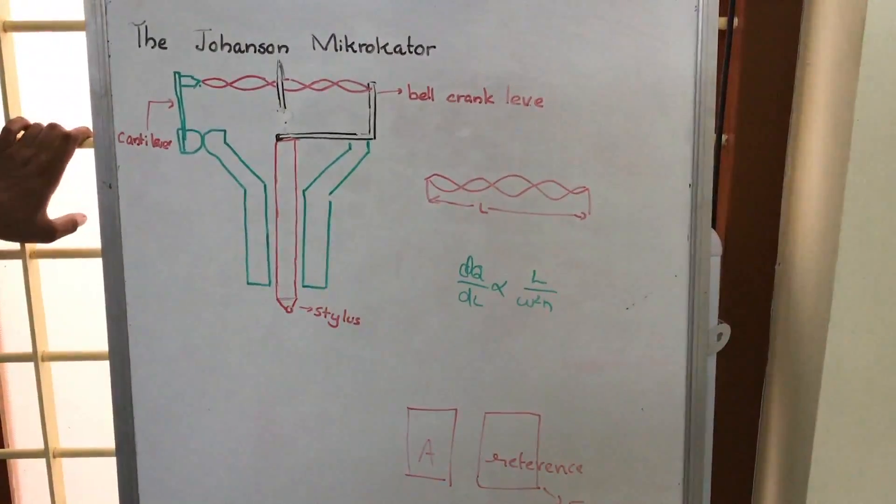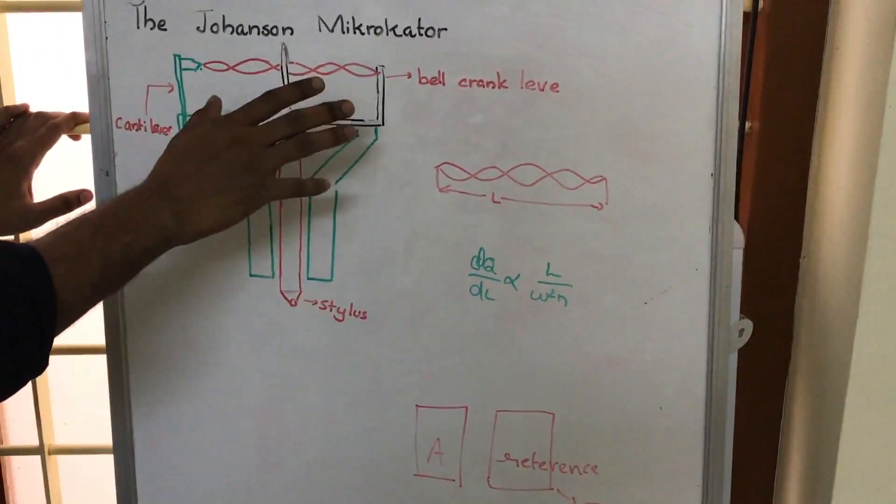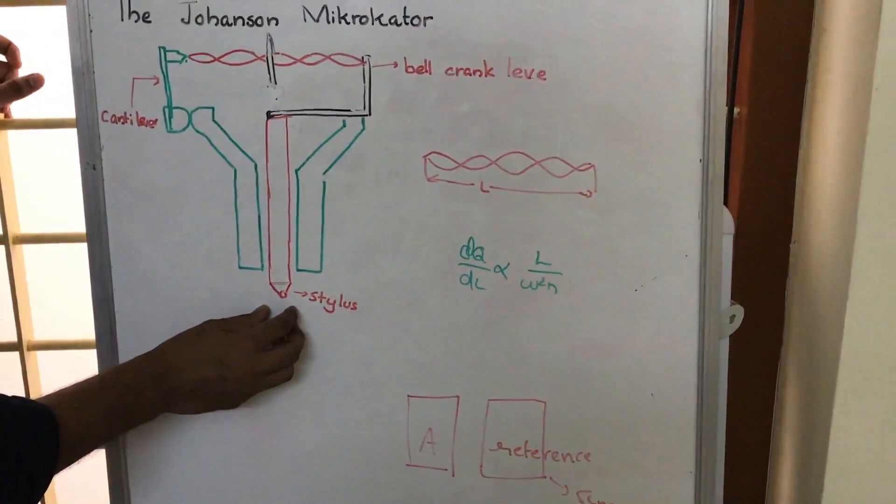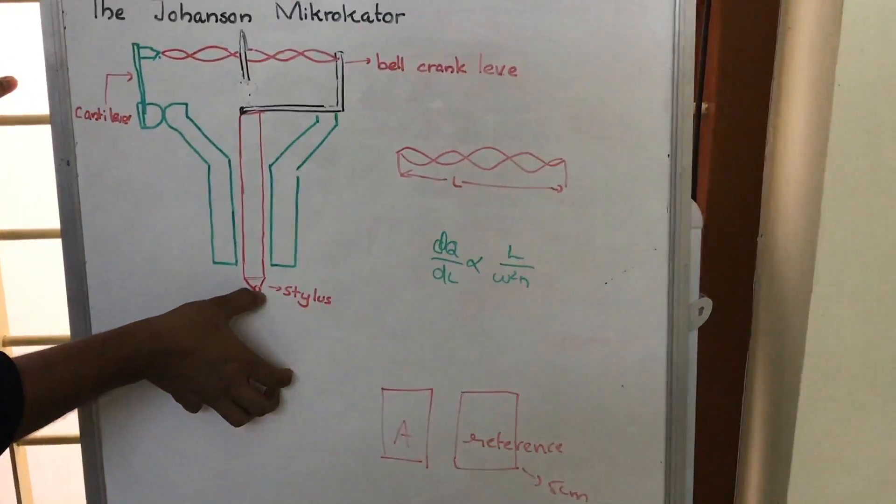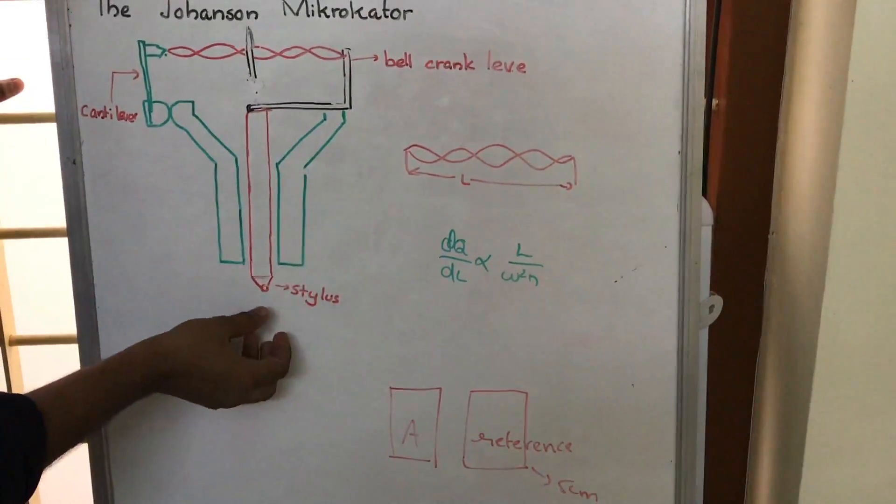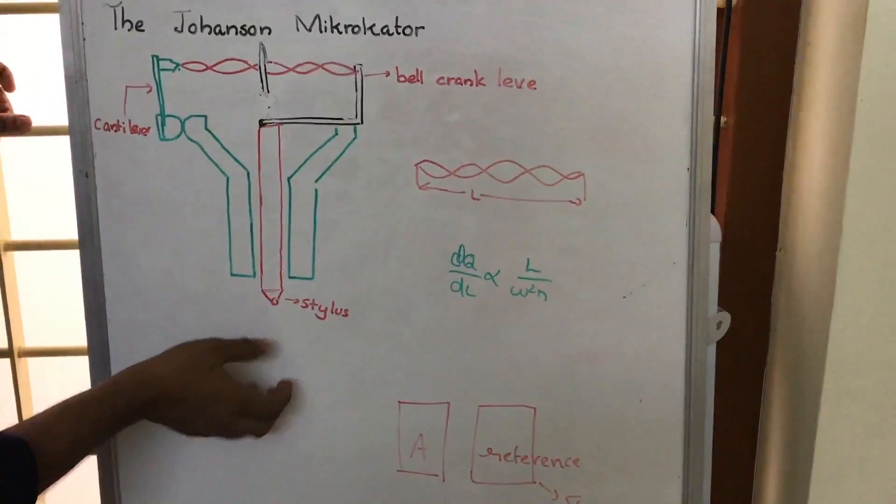In the mechanical comparator, this is a stylus, and we place the reference here. When we place the reference here, the stylus will move up or down. Because of that movement, the bell crank lever,